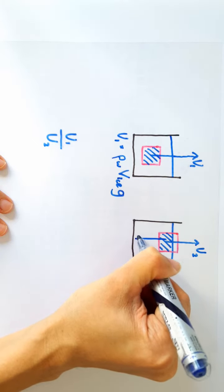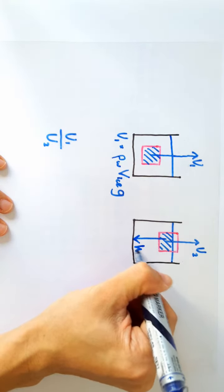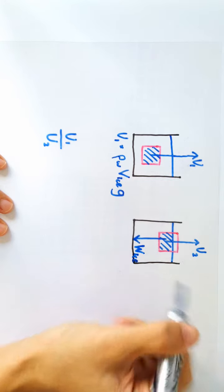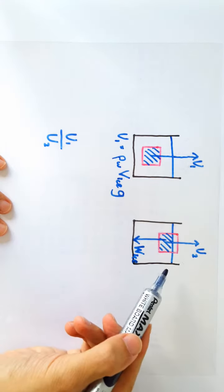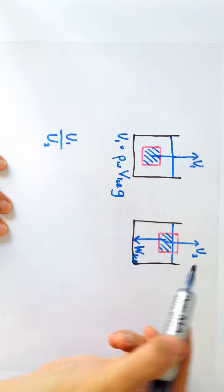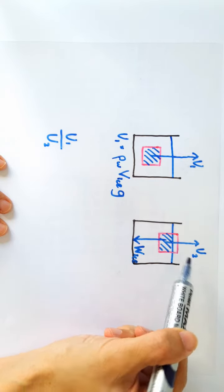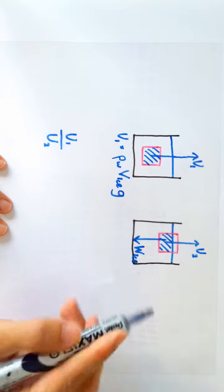we also know that this upthrust here must be equal to the weight of the ice block. That's why the ice block is floating, because the upthrust it receives from the water is exactly equal to its own weight.